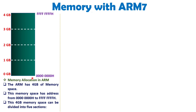Based on 32 bits of addressing with ARM7, we can have 4 GB of memory. The 32-bit addressing has a starting address of 0x00000000 (8 zeros hex) to 0xFFFFFFFF (8 F's hex). This 4 GB of memory is divided into 5 different sections in general. Let us see all those sections step by step.